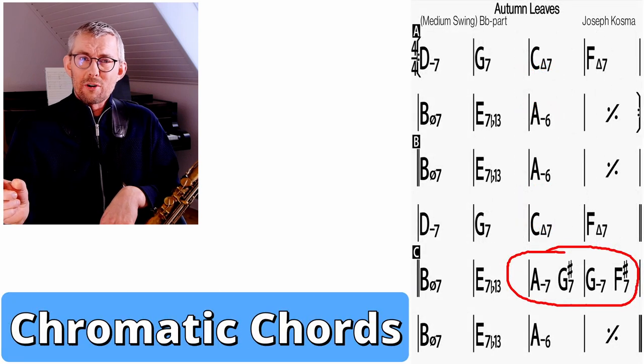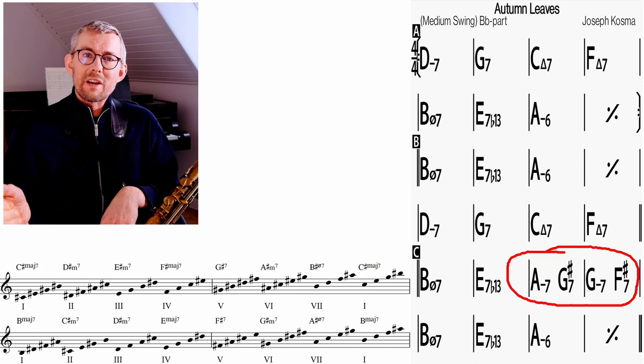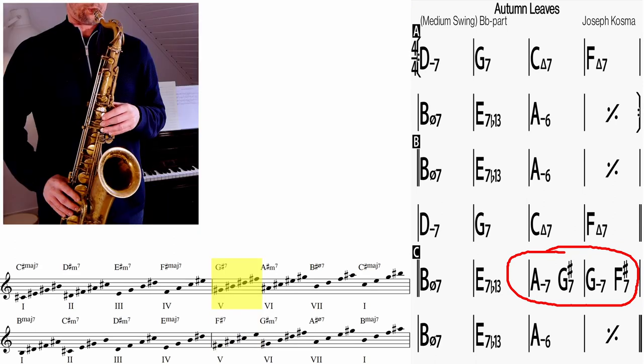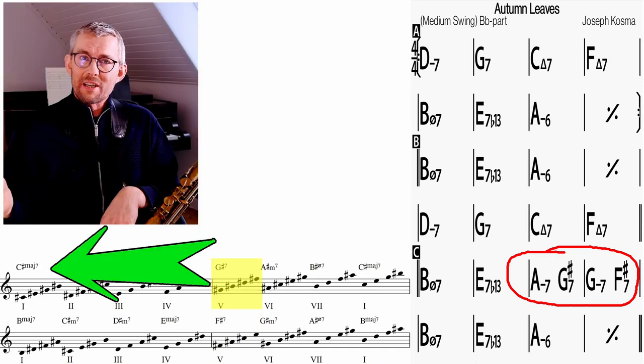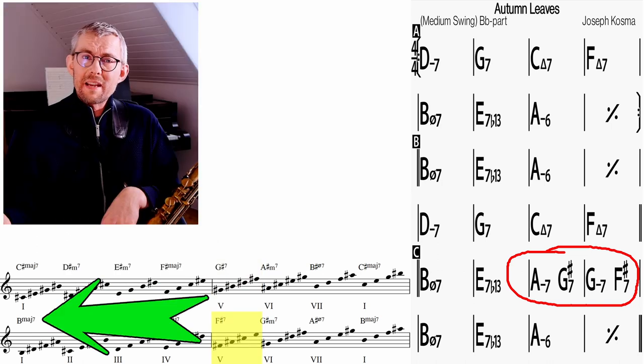Then there's this part in Autumn Leaves that's pretty tricky. The G sharp 7 and the F sharp 7, they're capital letters with a 7, so they're the 5th degree of a major key. The G sharp belongs to the C sharp key, and the F sharp belongs to the B major key.